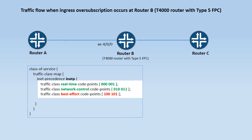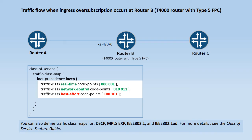The network control and real time packets have higher priority than the best effort packets. You can also define traffic class maps for DSCP, MPLS EXP, IEEE 802.1, and IEEE 802.1 AD.